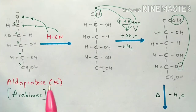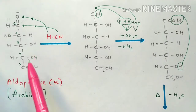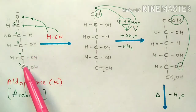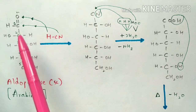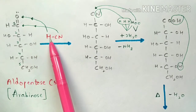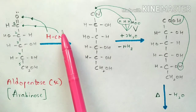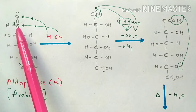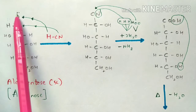Now let us learn the mechanism of Kiliani-Fischer synthesis for interconversion of aldo pentose to aldo hexose. The reaction begins with aldo pentose — there are totally 5 carbons, which is arabinose, with the aldehyde group at the first carbon. The total mechanism occurs at the first carbon. This aldo pentose is treated with HCN, where H acts as a proton and CN (cyanide) acts as a negative ion, since it contains negative charge — that is, it contains a lone pair of electrons.